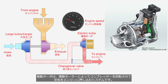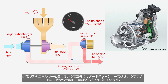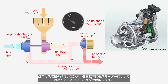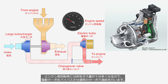An electric turbocharger is a system that uses an electric motor to rotate a compressor wheel and force air into the engine. While it doesn't utilize exhaust gas energy and is not a turbocharger in the strict sense, it is commonly referred to as an electric turbocharger because of its shape. At low engine speeds with low exhaust gas flow, the electric turbocharger produces boost pressure to reduce turbo lag. At high engine speeds where there is sufficient exhaust gas flow, the electric turbocharger is bypassed and the normal turbocharger provides the boost.